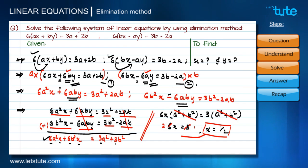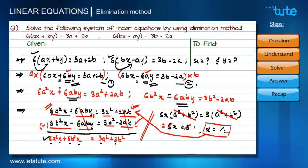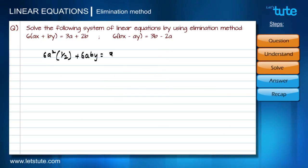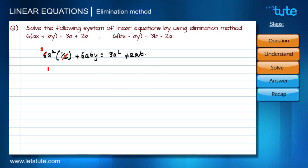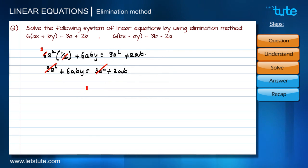Now we substitute x = 1/2 into equation one: 6a²x + 6aby = 3a² + 2ab. Substituting gives 6a²(1/2) + 6aby = 3a² + 2ab. The 2 cancels with 6 to give 3a² + 6aby = 3a² + 2ab. The 3a² terms cancel from both sides.